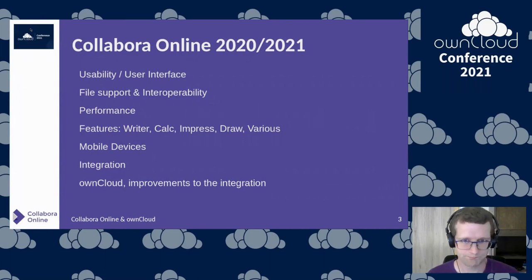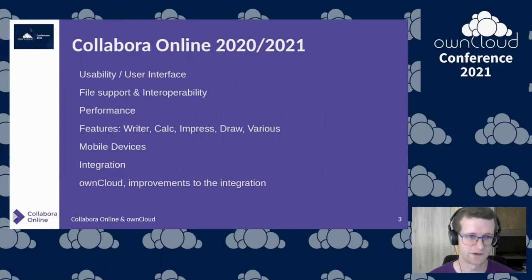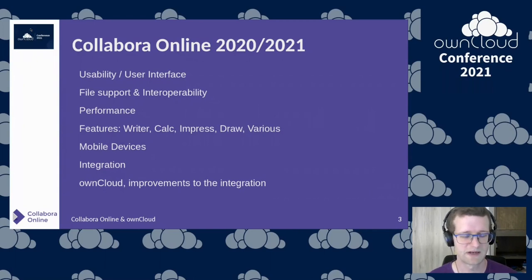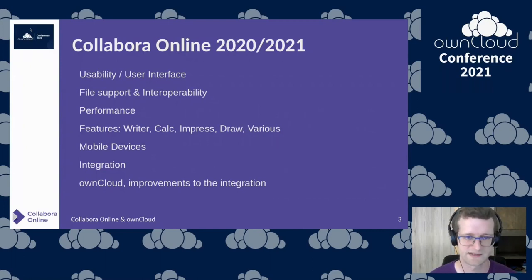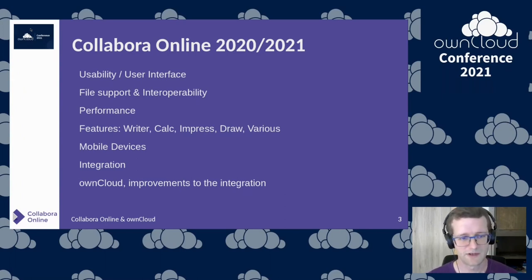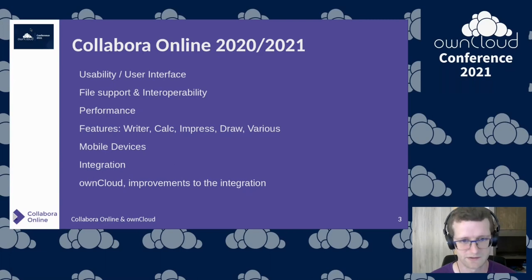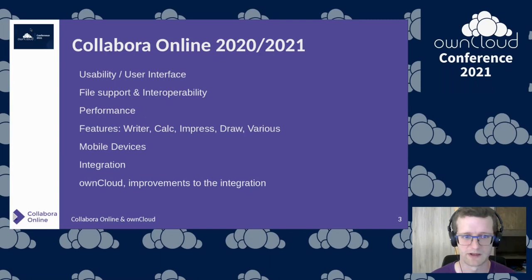Regarding Collabora Online, I would like to present what's new around what happened in the past year: the usability of the software, how the user interface has changed, file support and interoperability improvements, performance work with edge cases and lots of collaborative editors in parallel. I'll also give a flavor of new fixes and features in Writer, Calc, Impress, and Draw, as well as what's new when using Collabora Online from mobile devices, and then the integration with OnCloud.